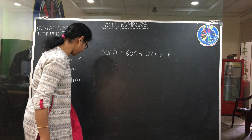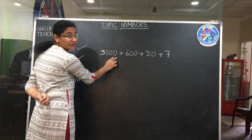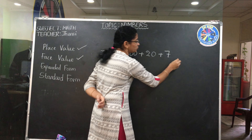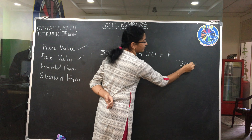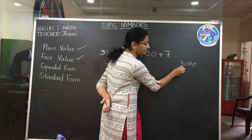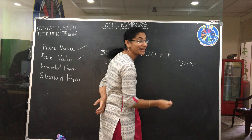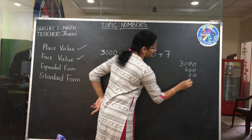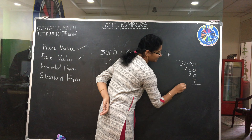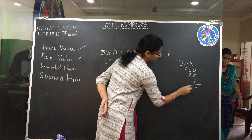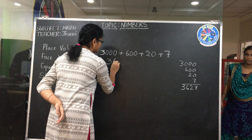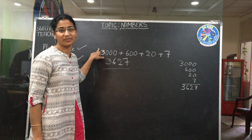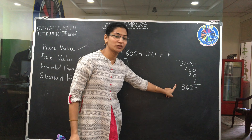Without looking at the expanded form, we can write the standard form. How many thousands? Three thousand — just write three. Three thousand, six hundred — write six. Twenty — only two tens, write two. Seven — write seven. So 3, 6, 2, 7. That's it. This is the standard form of this expanded form. If they give you the expanded form, you can write the standard form by adding. If they give you the standard form, you write the expanded form by using place values.